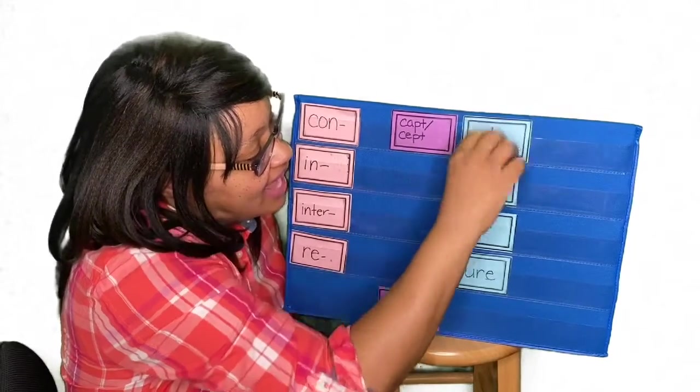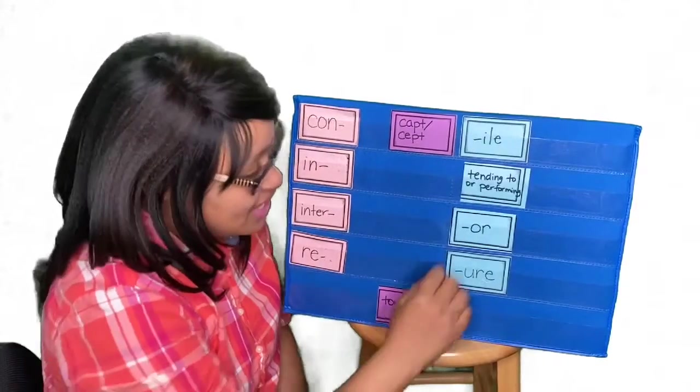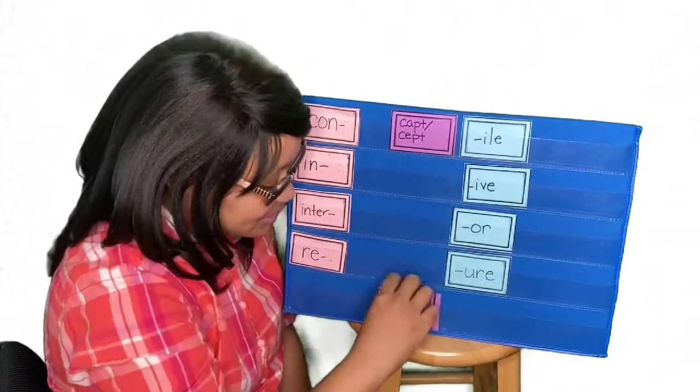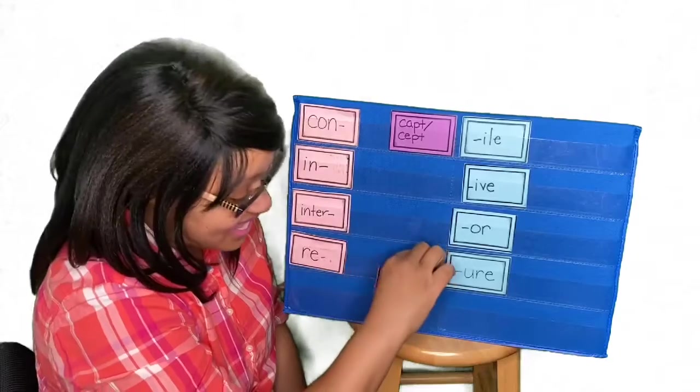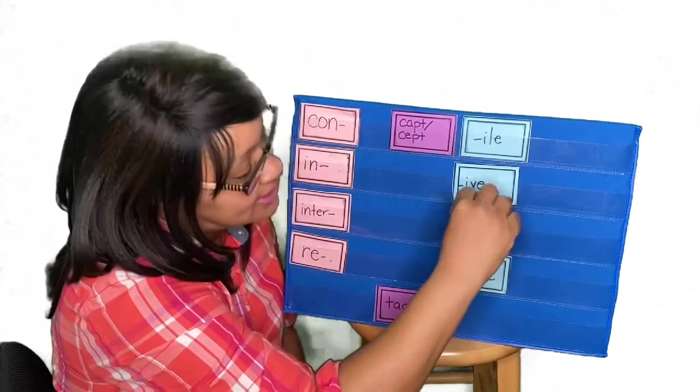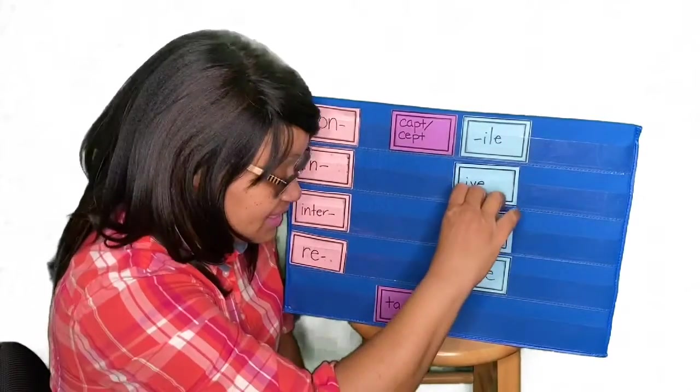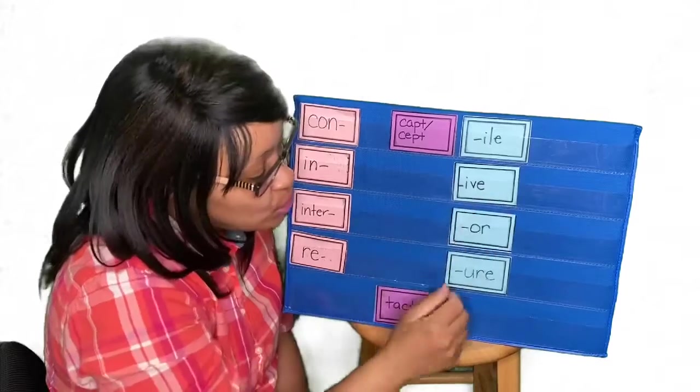Then we have -ive, which is tending to or performing. So, we're probably not going to use tactive. Let's see. Can we use tactor? We said -or was one who, that which has a condition, state, or quality. So, it's probably not going to be tactor.